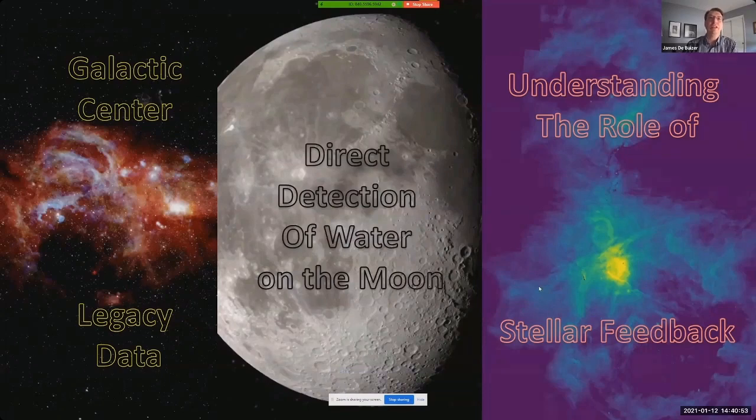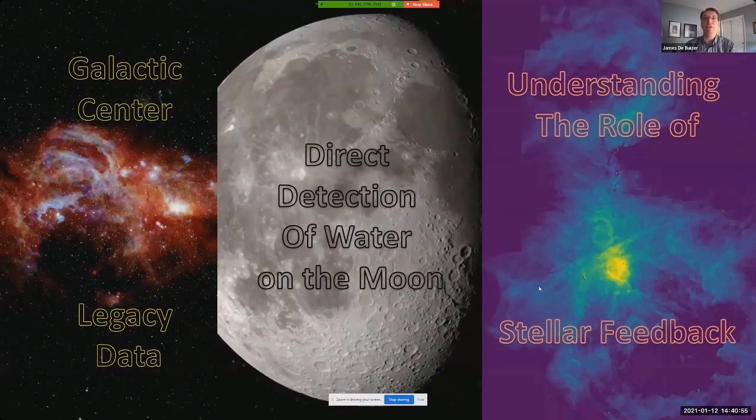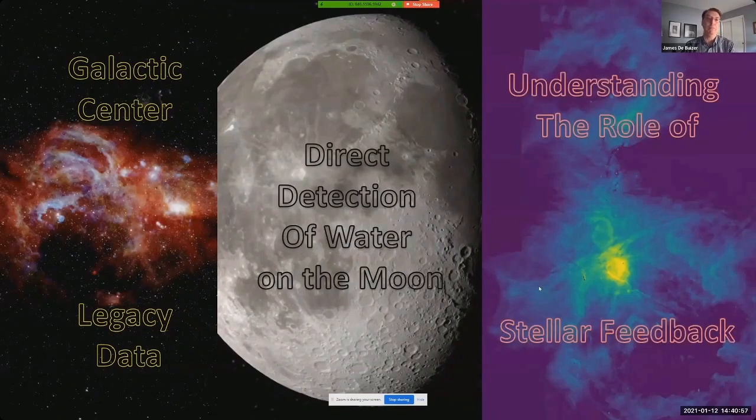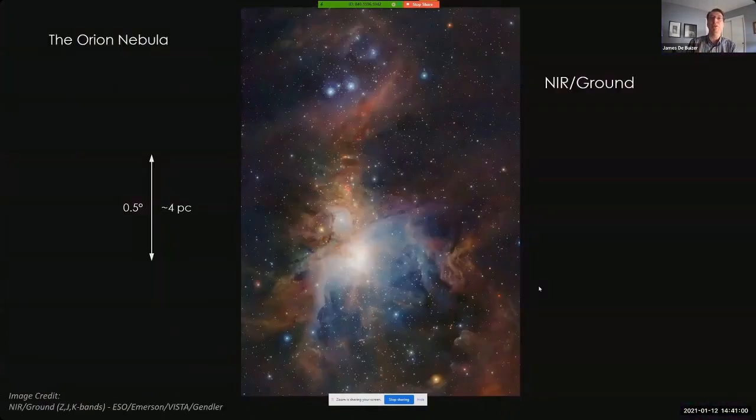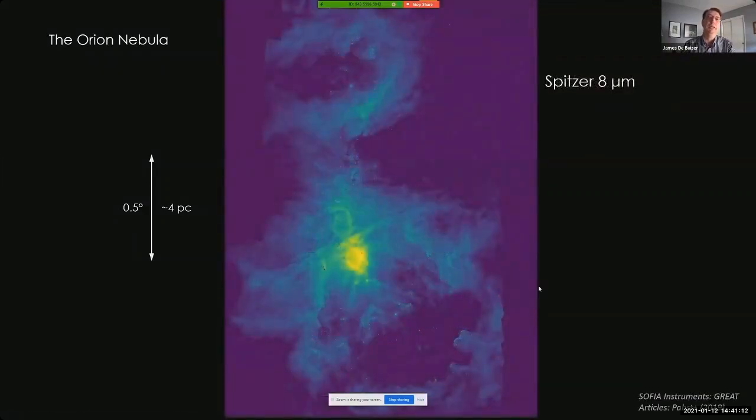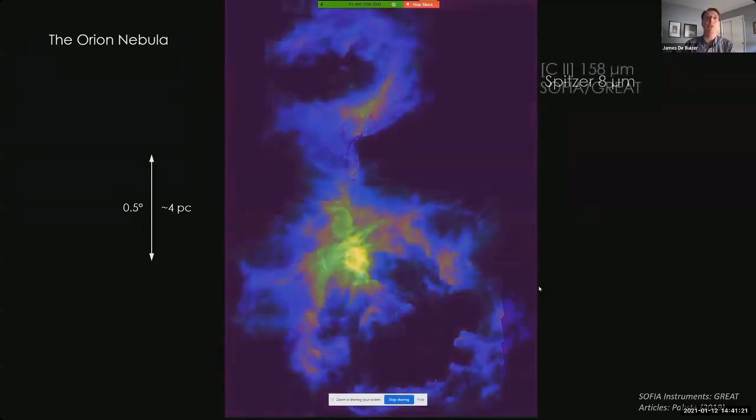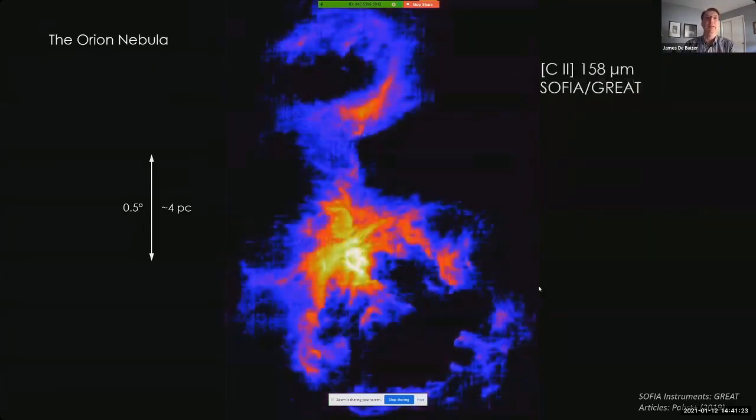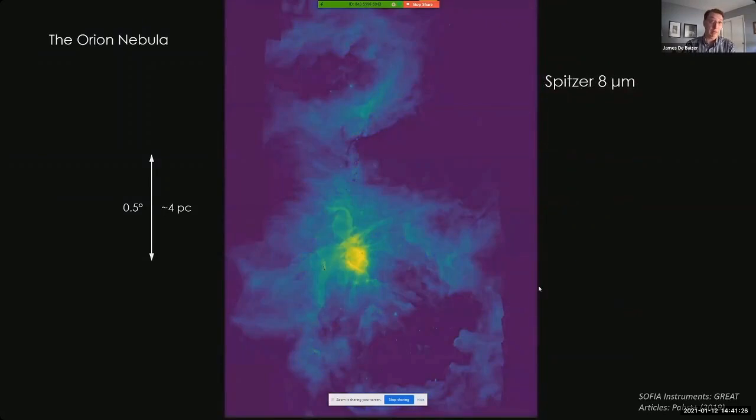Next I'll discuss SOFIA observations concerning the role of feedback from massive stars. Now we're all likely familiar with the beautiful optical images of the Orion Nebula like this one here. But in the mid-infrared and far-infrared, of course we get a direct view of the structures that make up the nebula via their dust emission, like in this 8 micron image. However, the dust here is intermixed with gas, and we can see great spatial correlations between the dust emission and ionized carbon gas emission, or C+ emission, as seen by SOFIA's GREAT instrument at 158 microns.